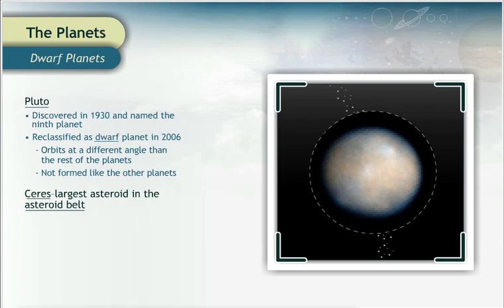Similar to Pluto, Ceres was once considered a planet, until scientists discovered the smaller asteroids that surround it.